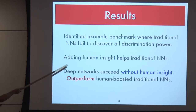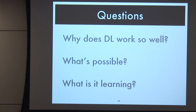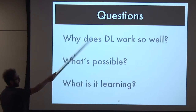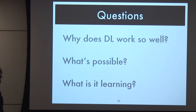In the past, you needed human insight to help traditional networks. But these deep networks can succeed without that human insight - you no longer need to do the physics preprocessing, and they still outperform human-guided traditional networks. That's great news. But it raises really interesting questions: what is it doing, why does it work so well, what's possible to learn, and how is it extracting this information?